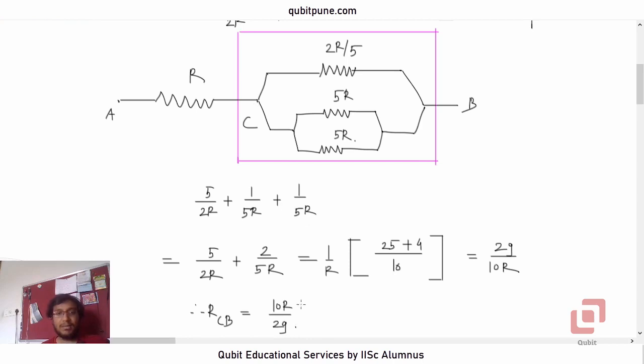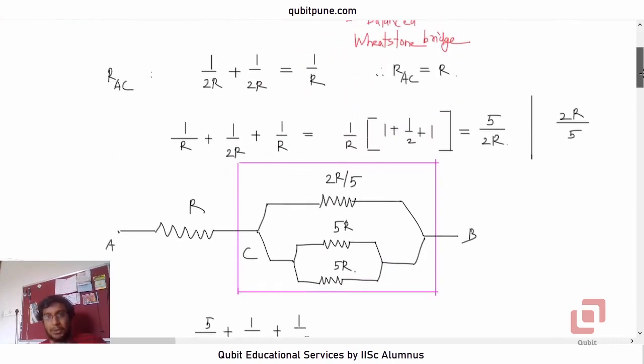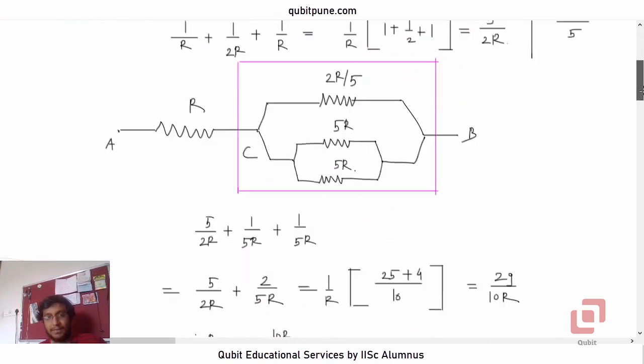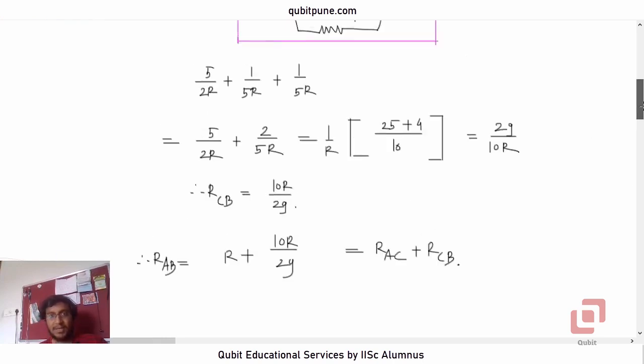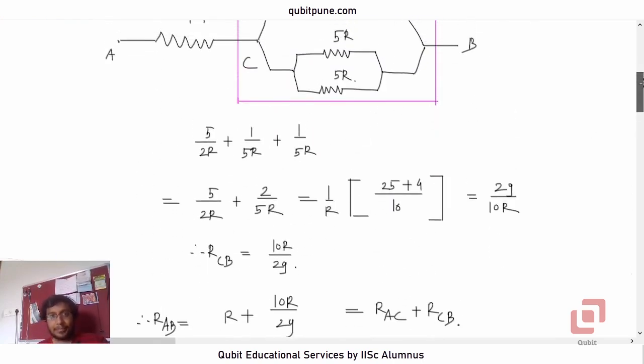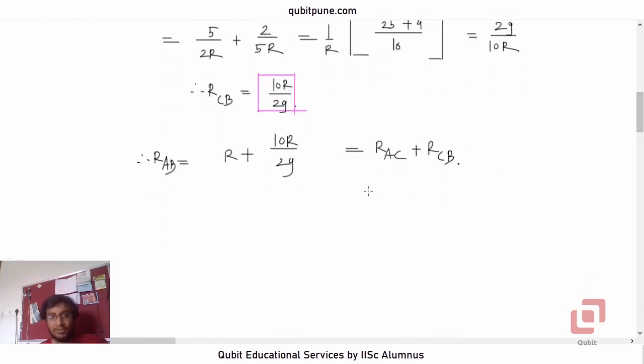So the final answer is 10R by 29 plus R. Therefore RAB will be RAC plus RCB. RAC we had already computed, it was equal to R. This is RCB. Let me write it now: RAC plus RBC, because RAC and CB are in series. Let me also highlight this: 10R by 29. So we are adding 1 to this, so that has to be 39R upon 29.